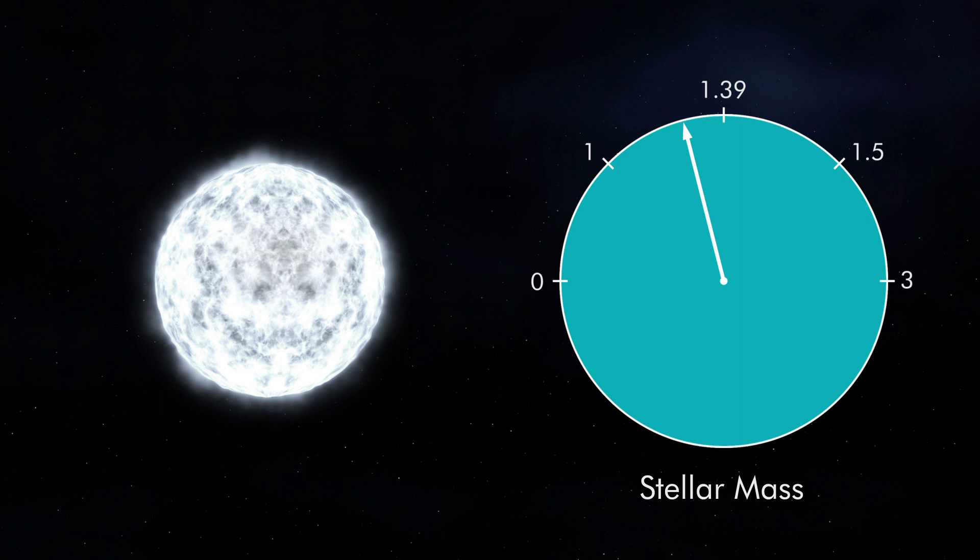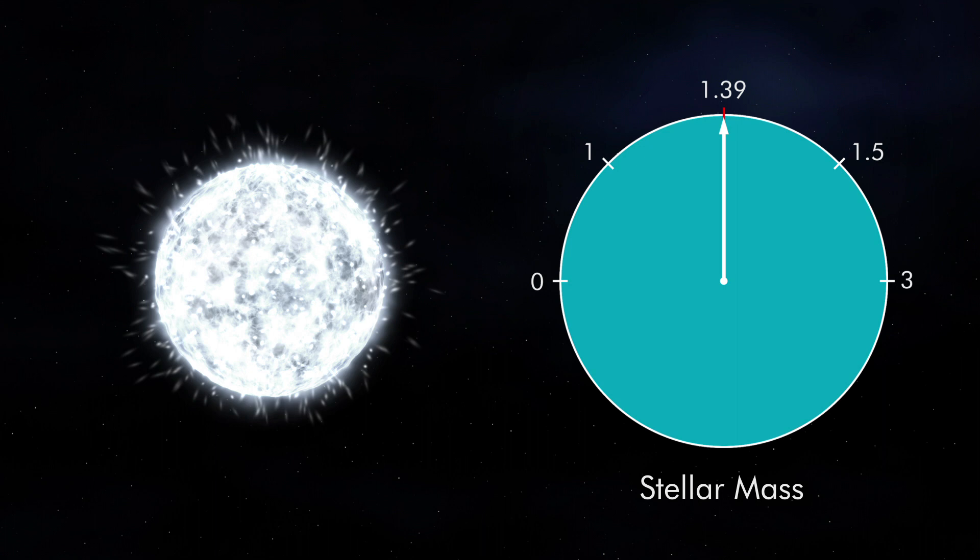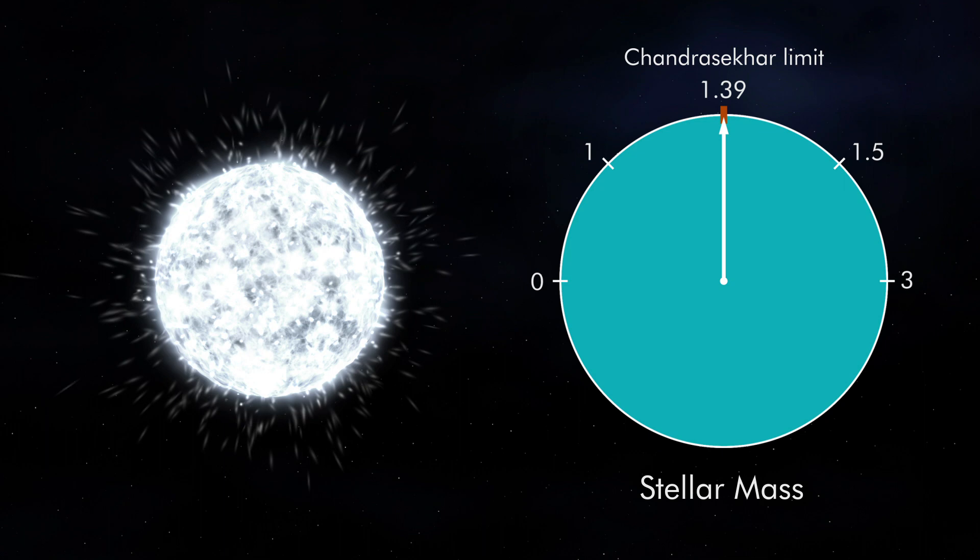Once we turn the dial to 1.39 solar masses, gravity is strong enough to combine electrons and protons to make neutrons and neutrinos. This value on the dial is called the Chandrasekhar limit.